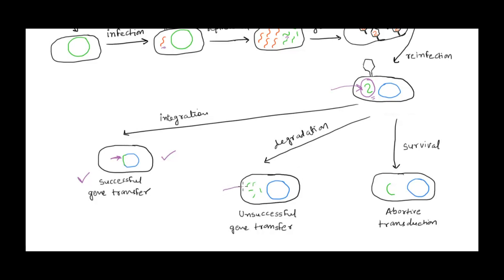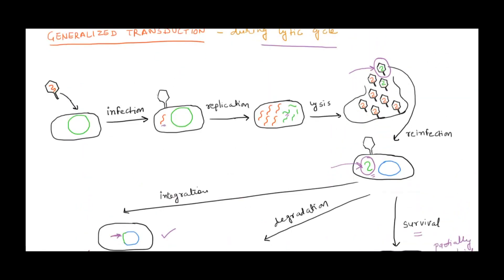The second outcome: the newly entered DNA fragment gets degraded, resulting in unsuccessful gene transfer. The third outcome: the DNA fragment survives but is neither integrated into the recipient genome nor degraded — it remains as a fragment and may still get expressed. This is called abortive transduction, where the bacterium is partially diploid, containing a fragment of chromosome from a donor bacterium.